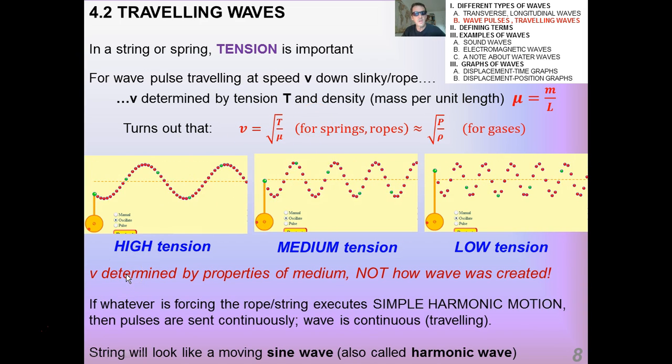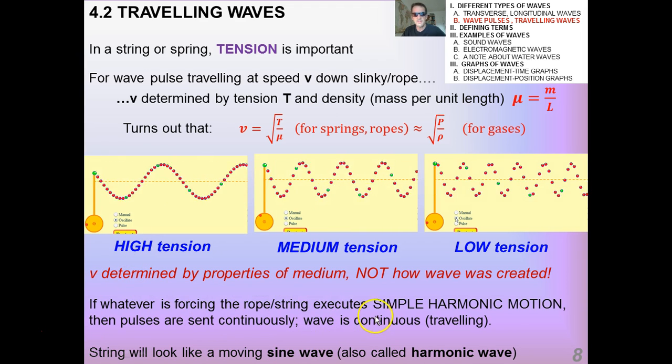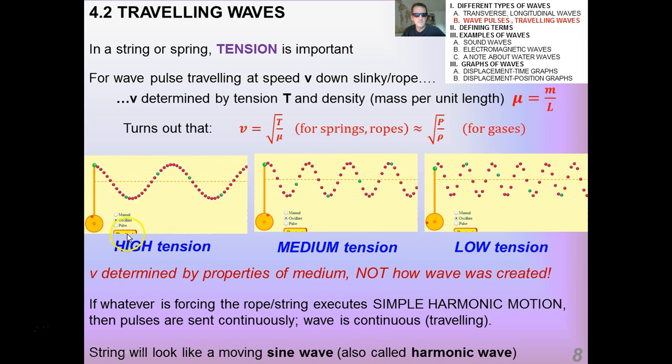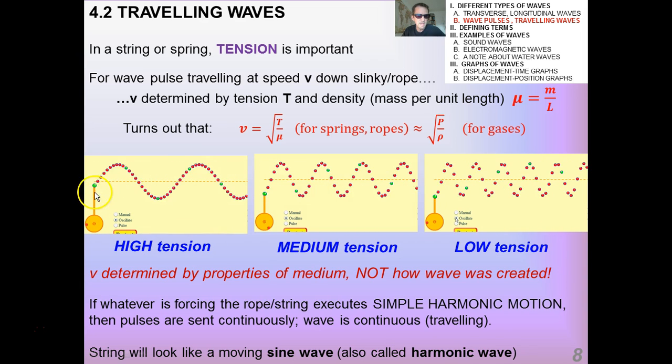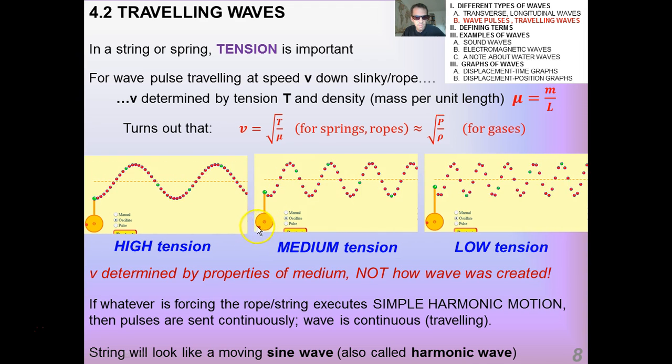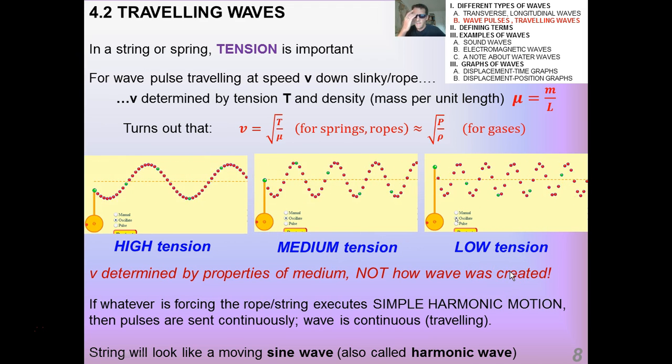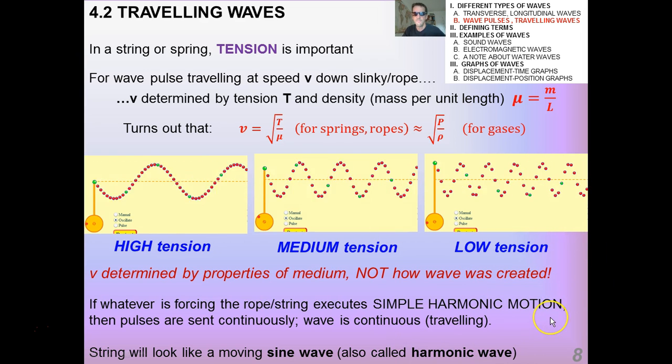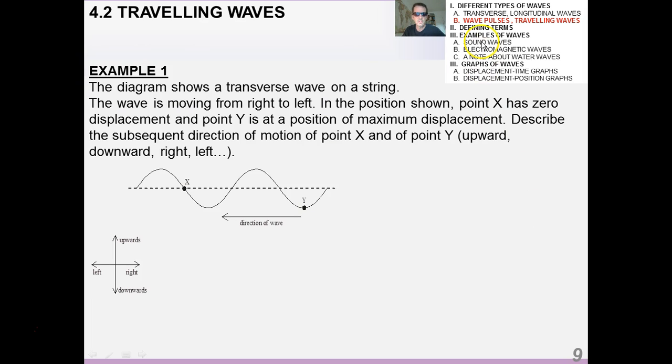So, the speed is determined by the properties of the medium, not how the wave was created. If whatever is forcing the rope executes simple harmonic motion, then pulses are sent continuously, and the wave is continuous. You see here, this thing that's actually generating this initial first green bead up and down, is a thing related to circular motion. You see that? So, it's a rotor, it's like a motor that's going around. This sine wave, this is a sinusoidal wave, it's also called, sometimes in physics, you see the term harmonic wave. So, just be aware that that basically means a sine wave, or something that's in simple harmonic motion.